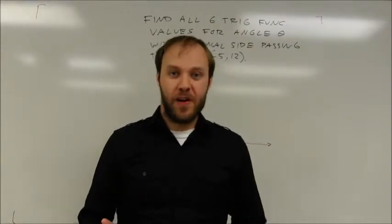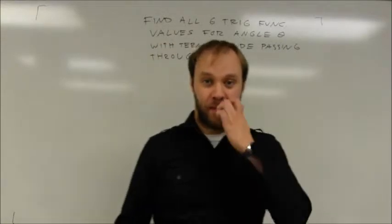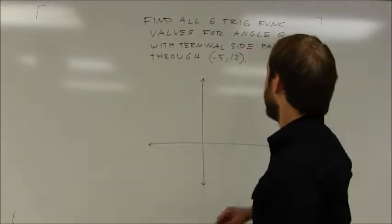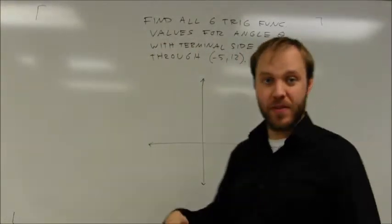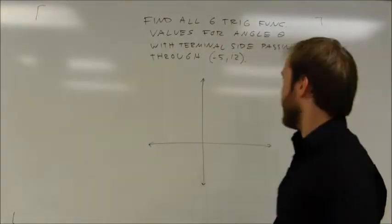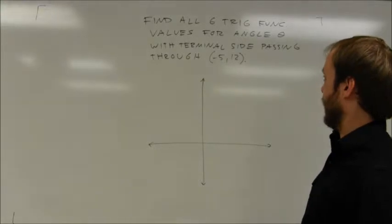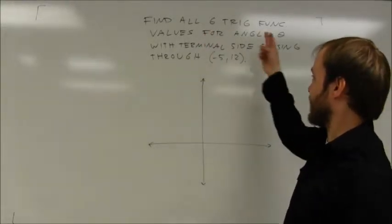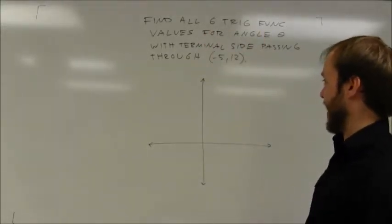This example is going to look a little different from the previous trig examples I've done. This one tells me I have an angle theta. It doesn't tell me what the measure of that angle is, but it tells me the terminal side of that angle passes through the point negative 5, 12, and I want to find all six trig function values for that angle.